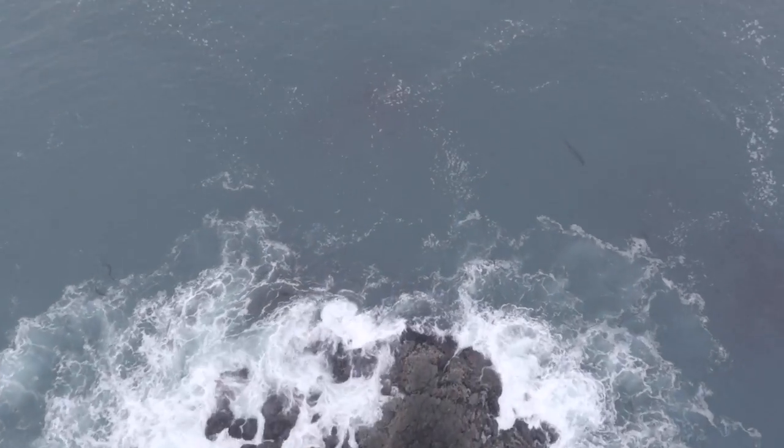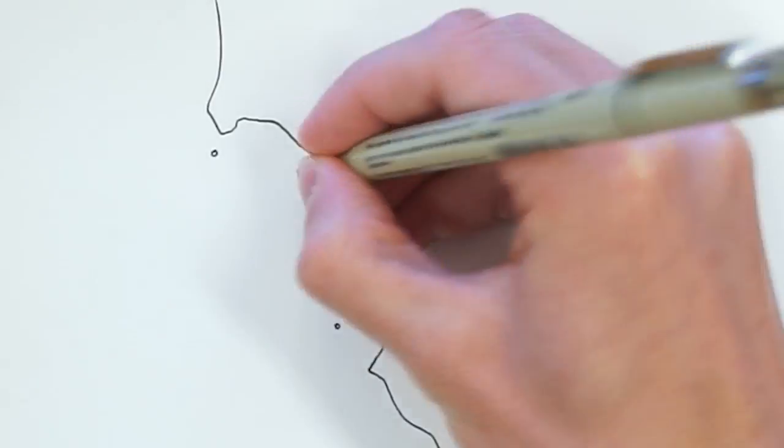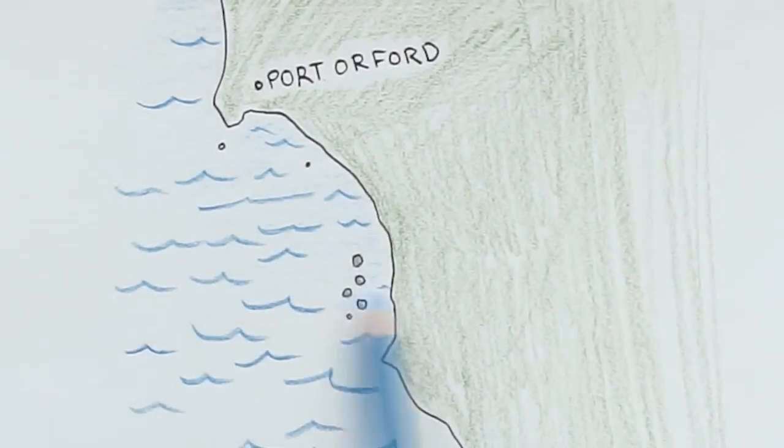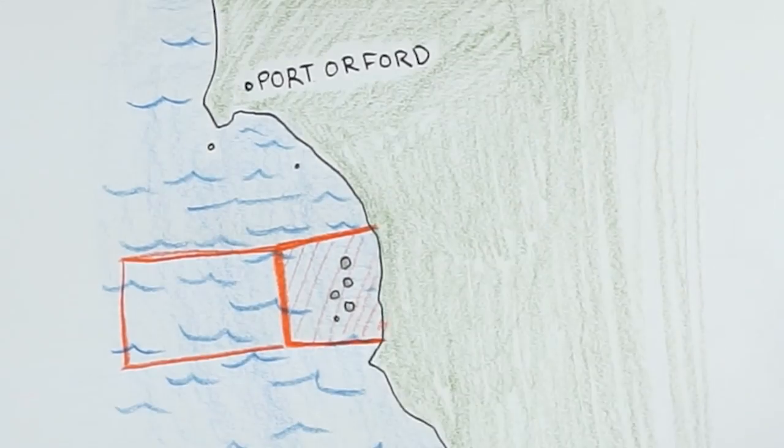This is the Redfish Rocks marine reserve. On the southern coast of Oregon, just south of the small town of Port Orford, you can find this small three-square-mile reserve and attached marine protected area.